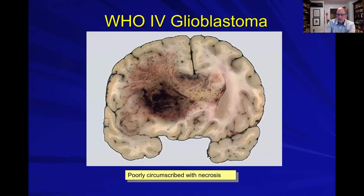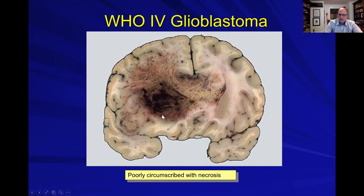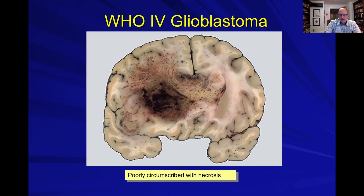This specimen is a good illustration of how infiltrated these tumors are. The central area of necrosis is where your focus will be on MRI, but you can easily see how much these tumor cells spread beyond that focus, even to the contralateral hemisphere.